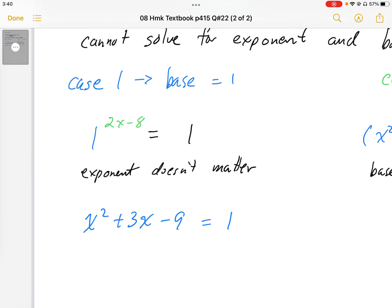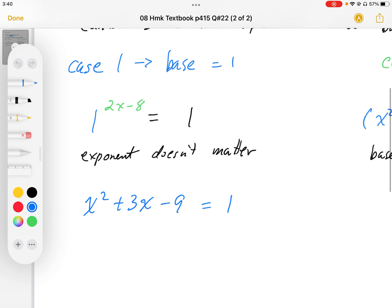We can then solve this equation for x as a quadratic equation. We get x² + 3x - 9 = 1, so x² + 3x - 10 = 0.